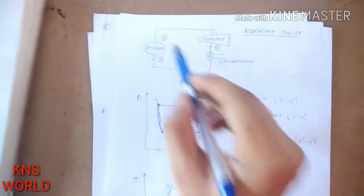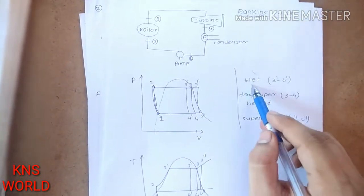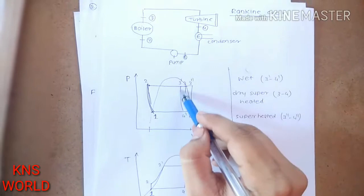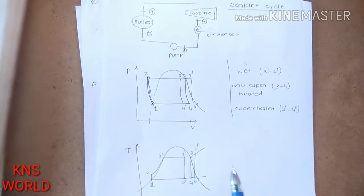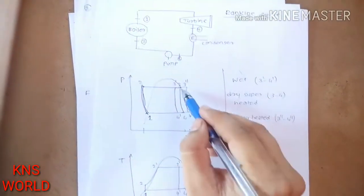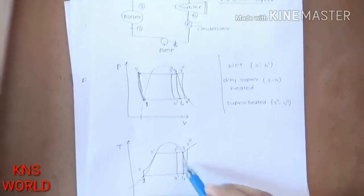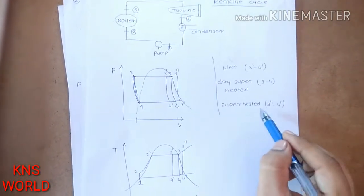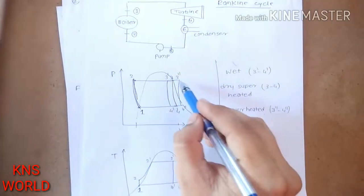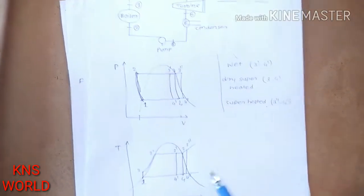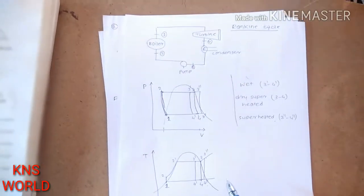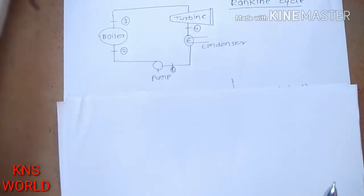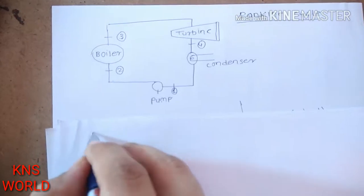For wet steam conditions, the process from boiler to turbine is shown as three-dash to four-dash on the PV diagram and TS diagram. For dry superheated steam, it is three to four on the TS diagram. If steam is superheated, the process is shown as three-double-dash to four-double-dash.